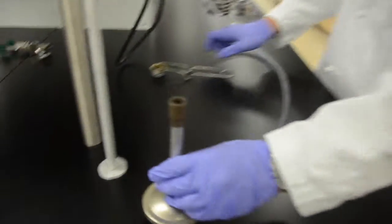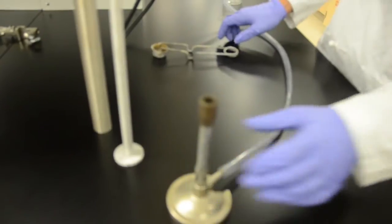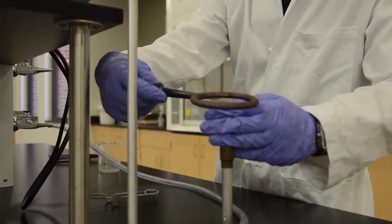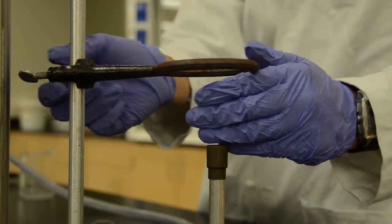After making sure that the connections are tight and secure, place the Bunsen burner directly below the mounting stand. Measure about three fingers above the tip of the Bunsen burner and firmly attach the first ring clamp at that height.